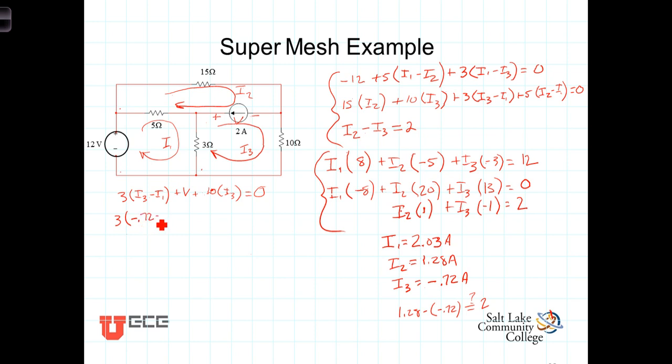Minus I1, which is 2.03 amps, plus V, plus 10 times I3, which is a negative 0.72 amps. The sum of those things has to equal 0. Solving this for V gives us V is equal to 15.45 volts.